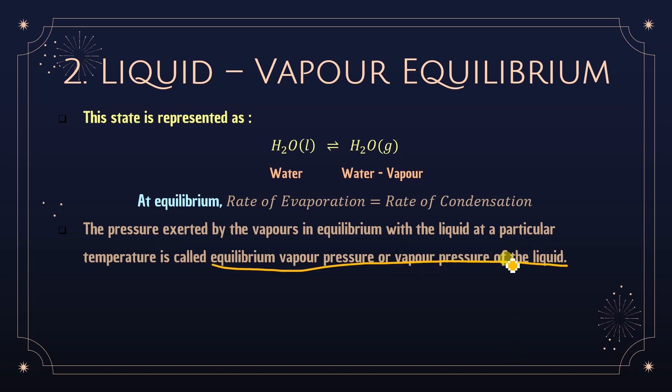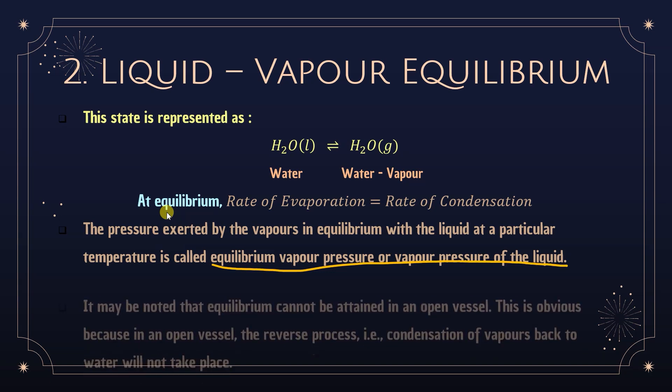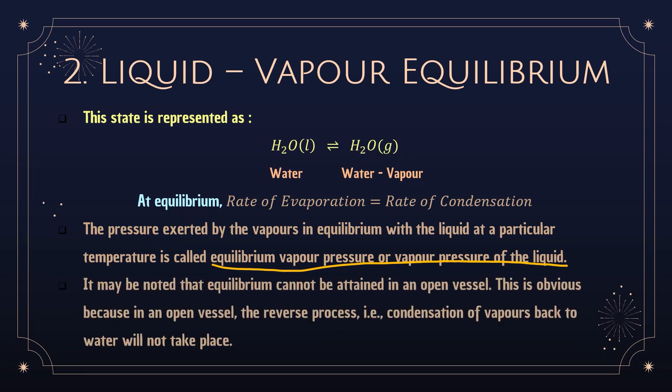It should be noted that liquid-vapor equilibrium cannot be attained in an open vessel. In an open vessel, all water molecules will vaporize but there is no chance for the vapor to condense back to water. So in an open vessel, equilibrium cannot be attained because the reverse process — condensation of vapors back to water — will not take place.